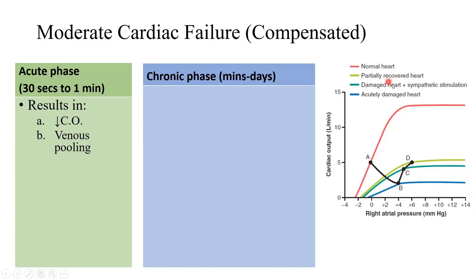Then later, in the chronic phase, with some additional mechanisms we'll discuss, you have a partially recovered heart — point D — meaning the heart is now compensated. The light green curve represents the compensated heart. The story goes: the person began on the red line as a normal person, heart failure took place during the acute phase, then acute recovery happened, then chronic recovery occurred along the light green line, and point D became the new reference point. This is the story of the heart failure going from point A to point D.